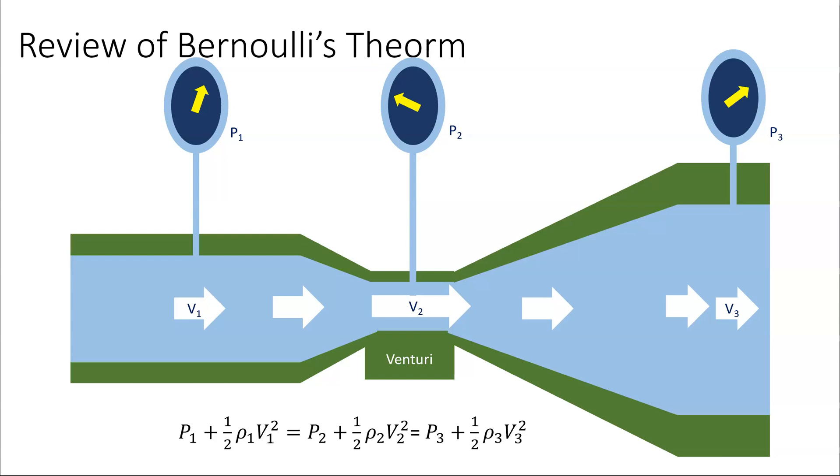So with Bernoulli's theorem, we saw that when air comes in, as it comes through a venturi, the air speeds up. And when we get this increase in velocity, this point here V2, to keep this equation constant, then there must be a decrease in pressure. So as the air speeds up, there's a decrease in pressure.